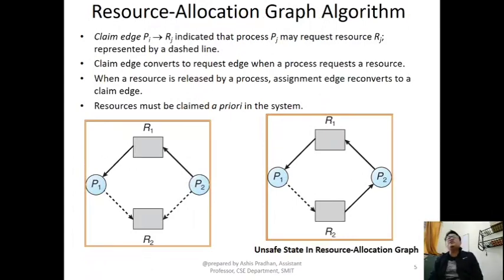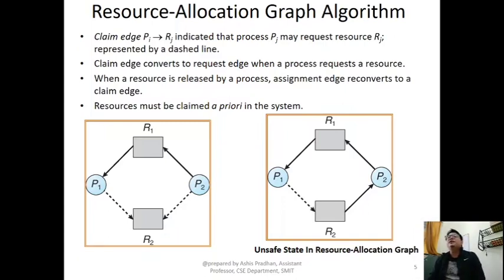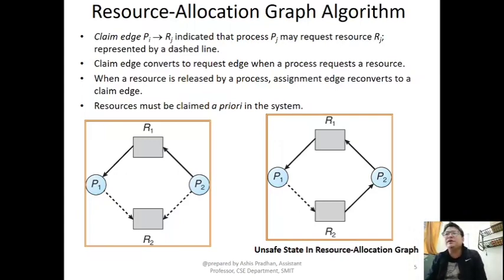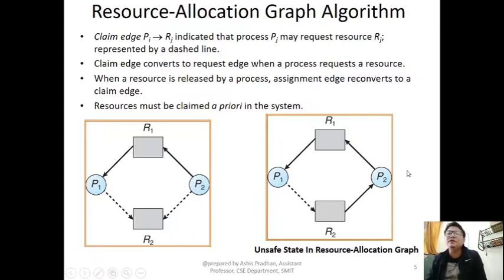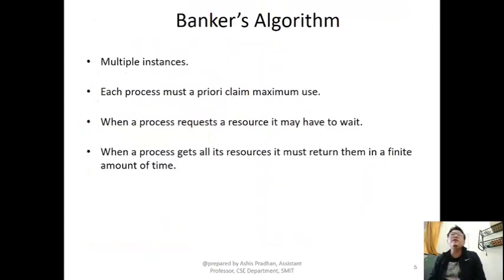From the resource allocation graph, if resources have only a single instance and a cycle exists, we can easily say the system is not safe and the request cannot be granted. However, if resources have multiple instances, identifying deadlock from the graph alone may lead to problems. For multiple-instance resources, we use the Banker's algorithm.